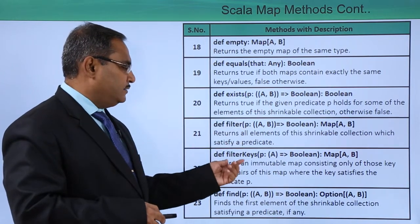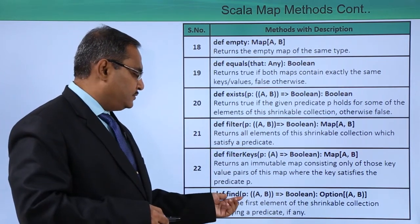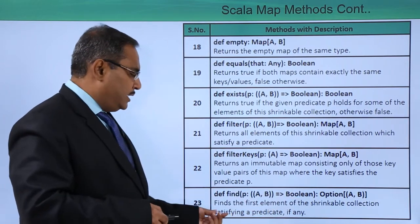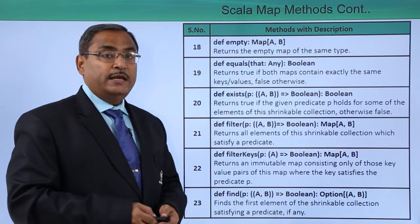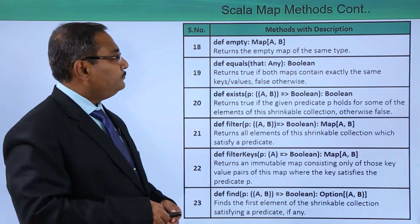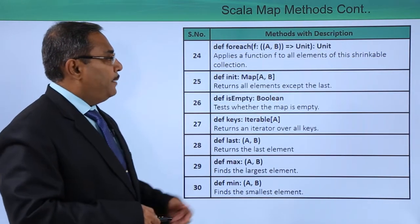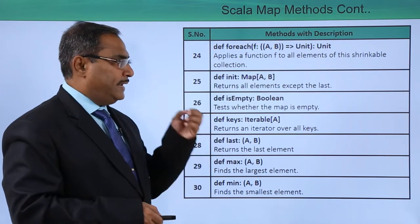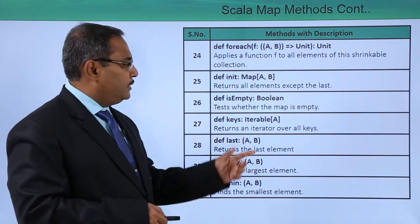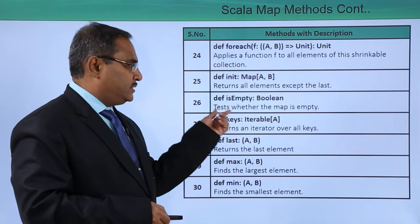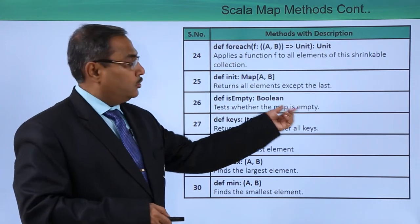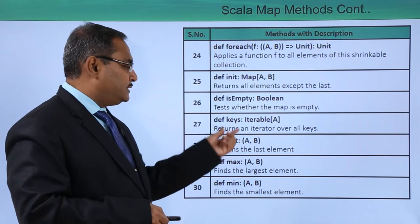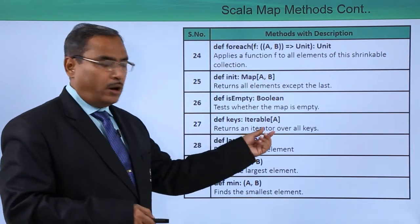We are having exists, filter, filterKeys, and find. Find returns the first element of the shrinkable collection satisfying a predicate, if there is any. We are having forEach and init, which returns all elements except the last element. isEmpty tests whether the map is empty or not, and that is why it returns Boolean — true or false. We are having keys, from which only the key values will be obtained.